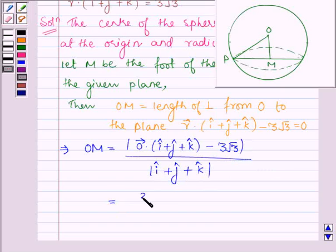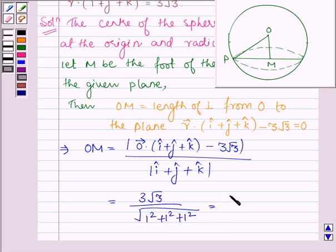Now this is further equal to 3 root 3 in the numerator, and root of (1 squared plus 1 squared plus 1 squared) in the denominator, which equals 3 root 3 divided by root 3, which is further equal to 3.